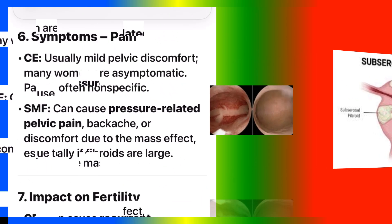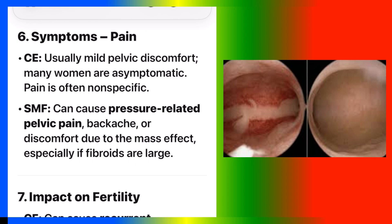Number six: symptoms — pain. CE usually causes mild pelvic discomfort. Many women are asymptomatic and pain is often nonspecific. SMF can cause pressure-related pelvic pain, backache, or discomfort due to the mass effect, especially if fibroids are large.